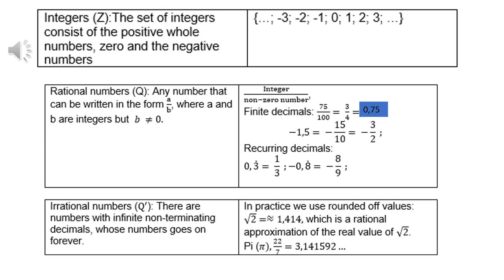Irrational numbers is Q with an accent mark. There are numbers with infinite non-terminating decimals whose numbers go on forever. In practice, we use rounded-off values. Like the square root of 2 is 1.414, and it goes on forever.